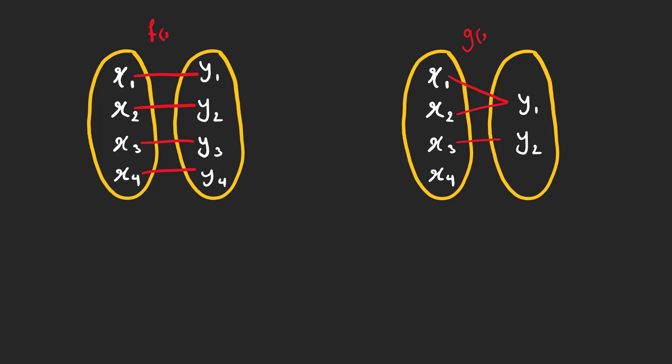Now consider these two functions. F of x is a one-to-one function because for each x we have a specific y. But g of x is not one-to-one because each input in this function doesn't correspond to exactly one output.